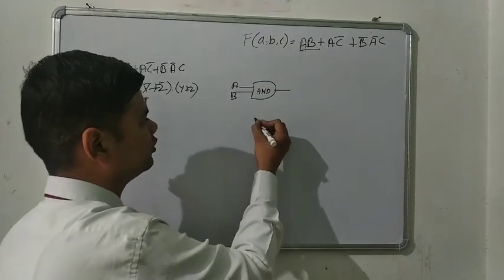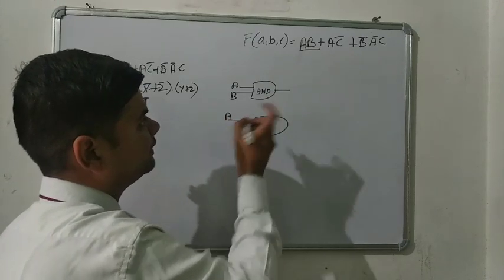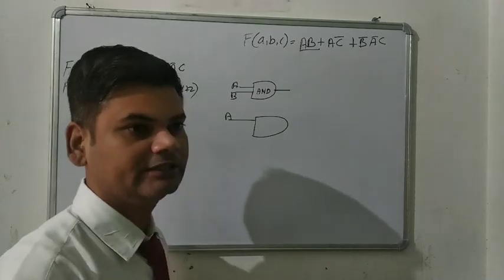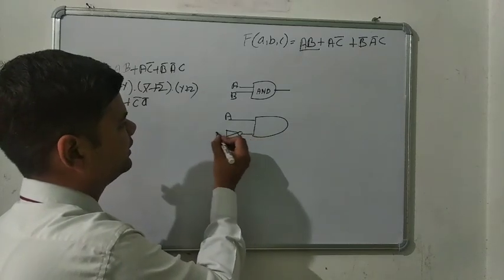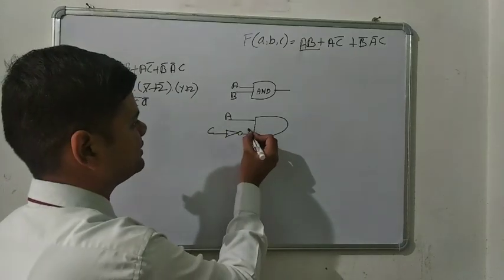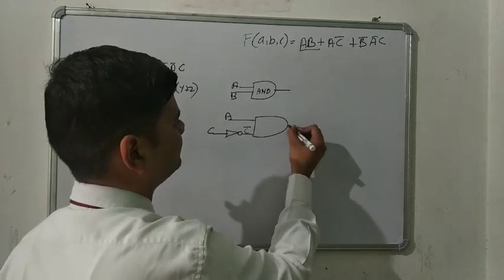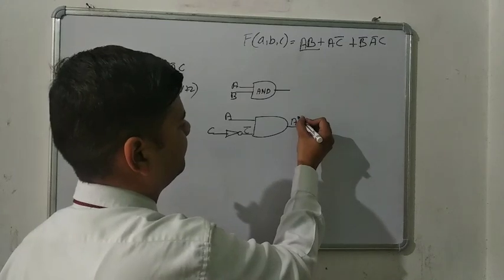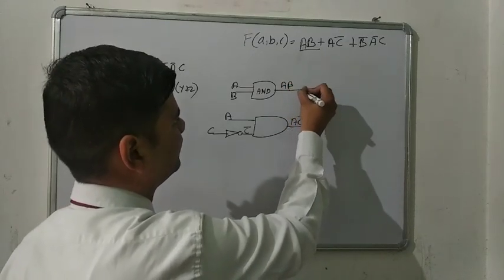Again we have to draw AC̄. We are taking A directly, but the second thing is C̄. So we are using the NOT gate first. We are taking C as the input for the NOT gate, and after this the output is the value of C̄. At the end the output is AC̄, and here the value is AB.